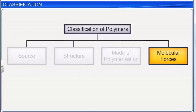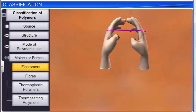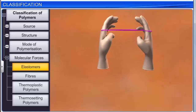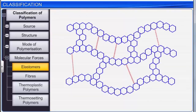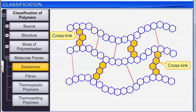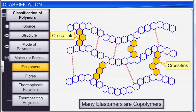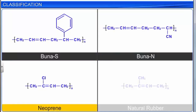Based on the molecular forces present in them, polymers are classified into four types: elastomers, fibers, thermoplastic polymers, and thermosetting polymers. Elastomers are rubber-like solids with elastic properties that can be stretched to many times their original length and snap back when force is released. The polymer chains in elastomers are held together by very weak intermolecular forces, with possibly a few cross-links. Many elastomers are copolymers. Examples are Buna-S, Buna-N, neoprene, and natural rubber.